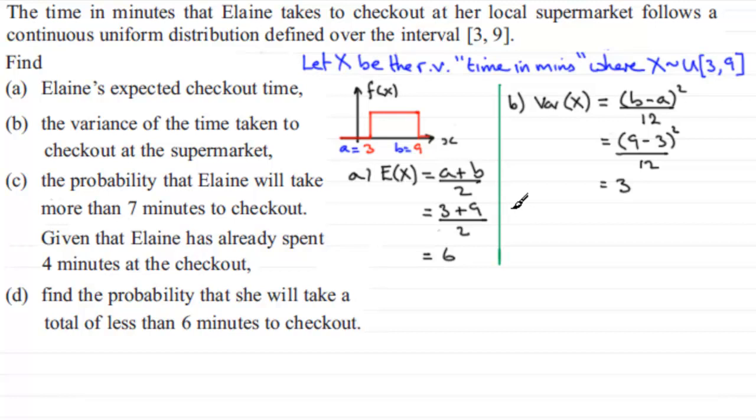Now, in part C, we've got a probability to work out. We've got to work out the probability that Elaine will take more than 7 minutes to check out. So, for this, this is going to be the probability that X is greater than 7. Now, to work out the probability that X is greater than 7, we need the area, because that represents probability in a probability density graph.